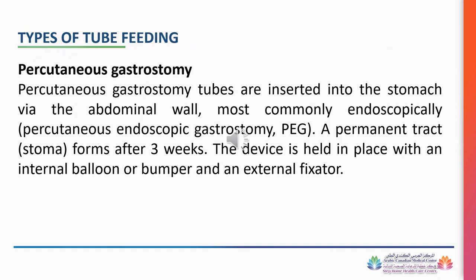Percutaneous gastrostomy tubes are inserted into the stomach via the abdominal wall, most commonly endoscopically — percutaneous endoscopic gastrostomy (PEG). A permanent tract forms after 3 weeks. The device is held in place with an internal balloon or bumper and an external fixator.